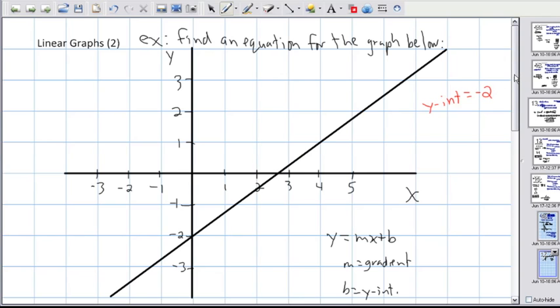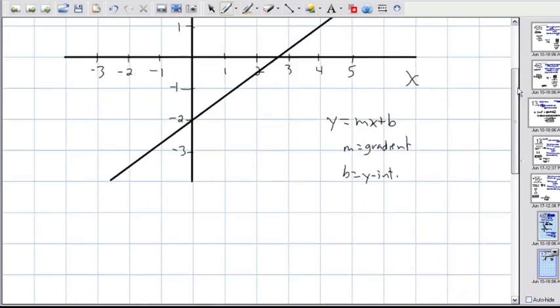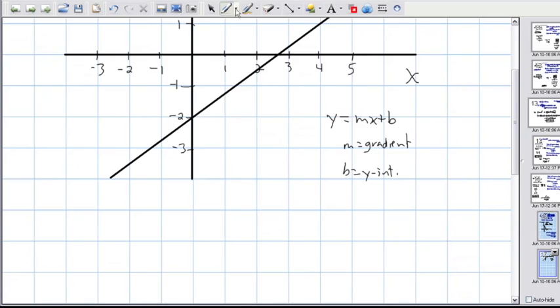So that was really easy. That means now I already know when I write it in y equals something x plus b, I know that my plus b is actually going to be negative 2. In other words now I know for sure that my equation is going to look like y equals something x minus 2.